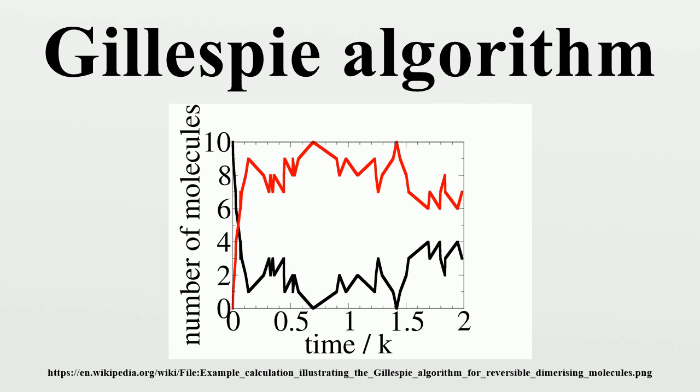So there are two reactions. The first is where one molecule of A reacts reversibly with one B molecule to form an AB dimer, and the second is where an AB dimer dissociates into an A and a B molecule.